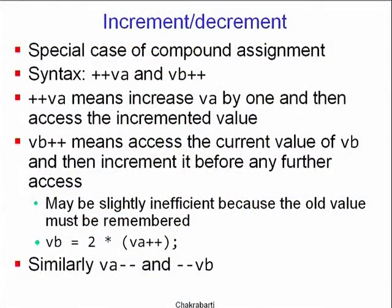'++va' means increase va by 1 and then access the incremented value, whereas 'vb++' means access and remember the current value of vb for use in whatever expression requires it, but then increment it before any further access. The post-increment form may be slightly inefficient because the old value must be remembered in a register.